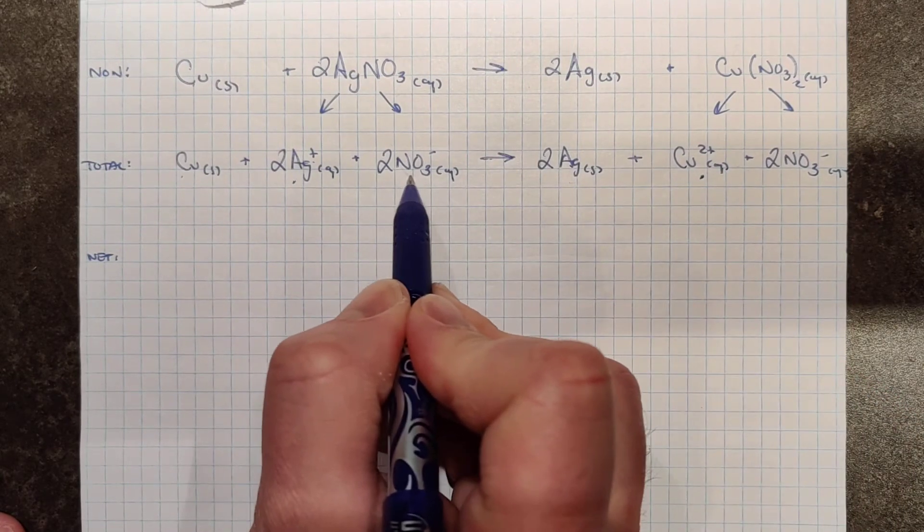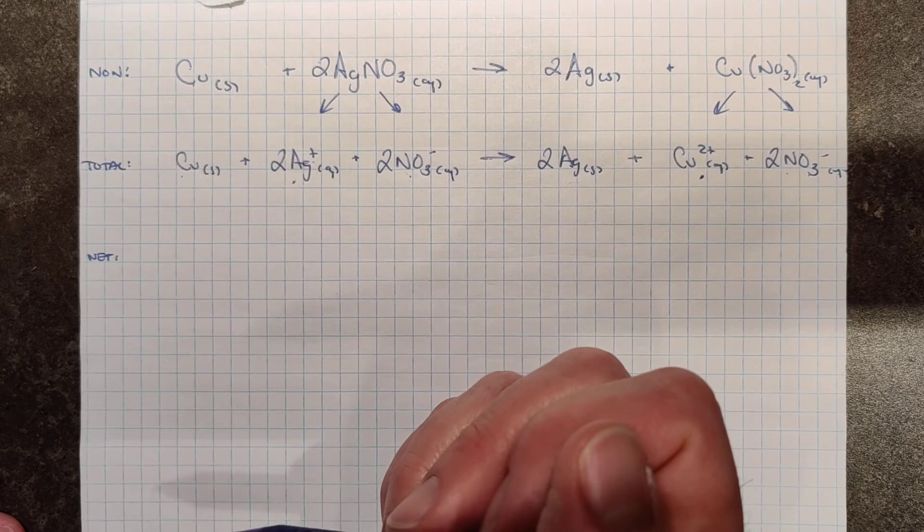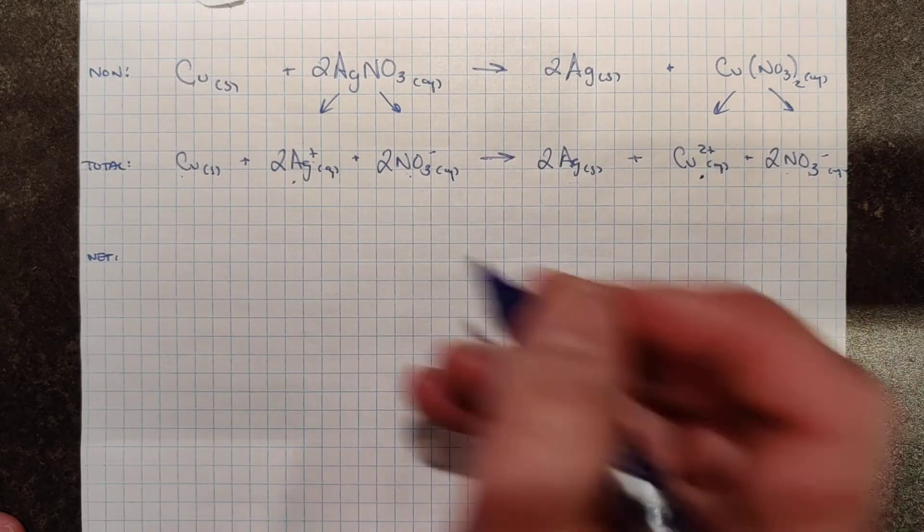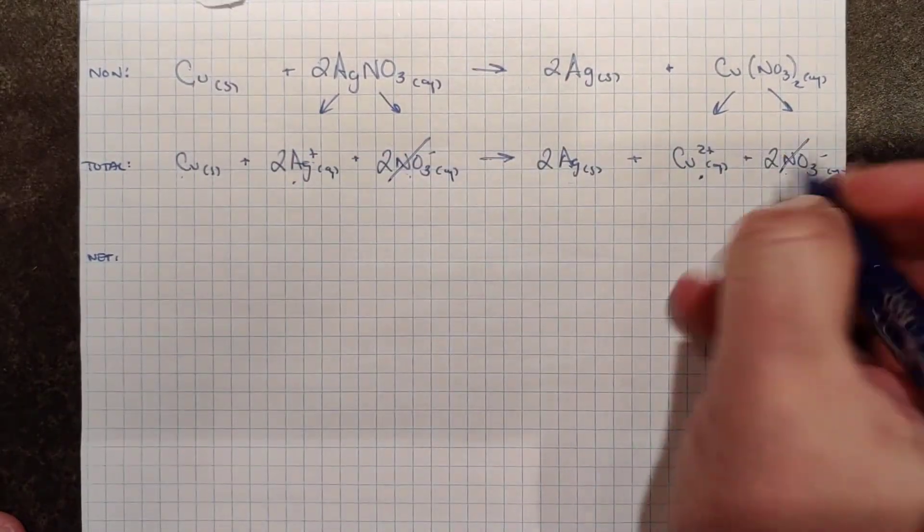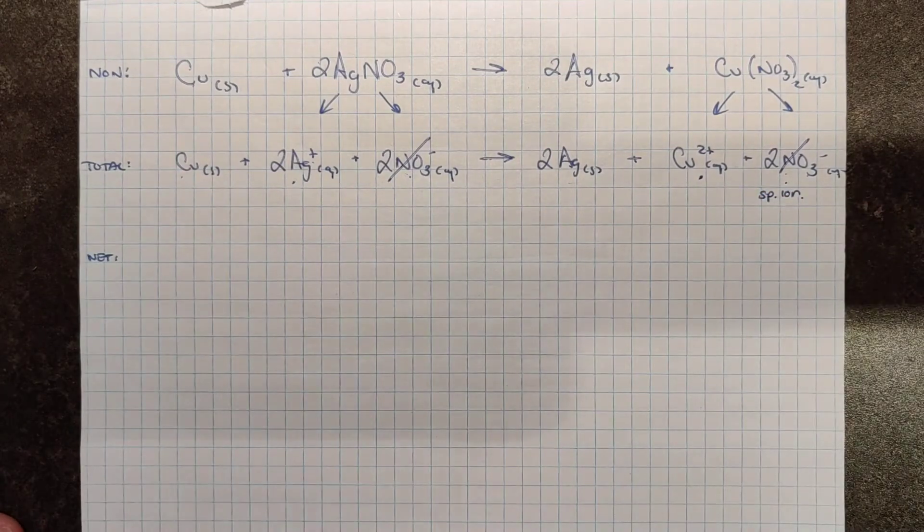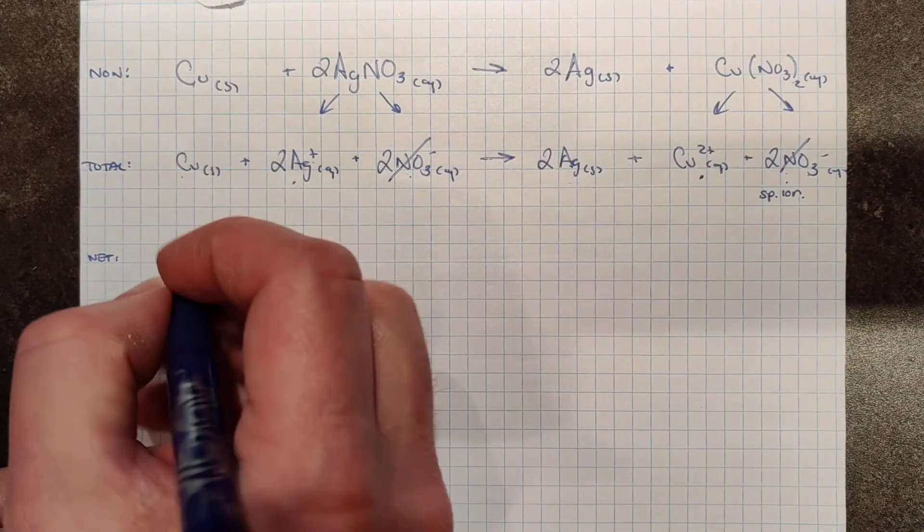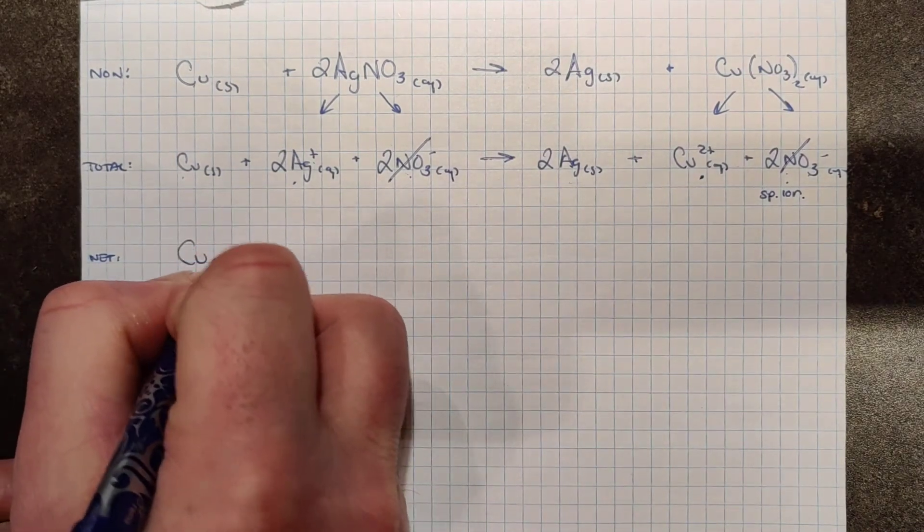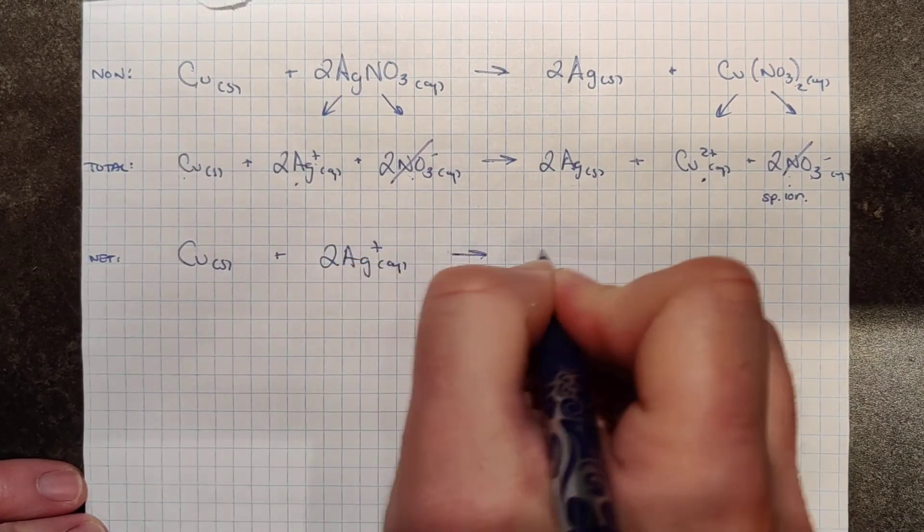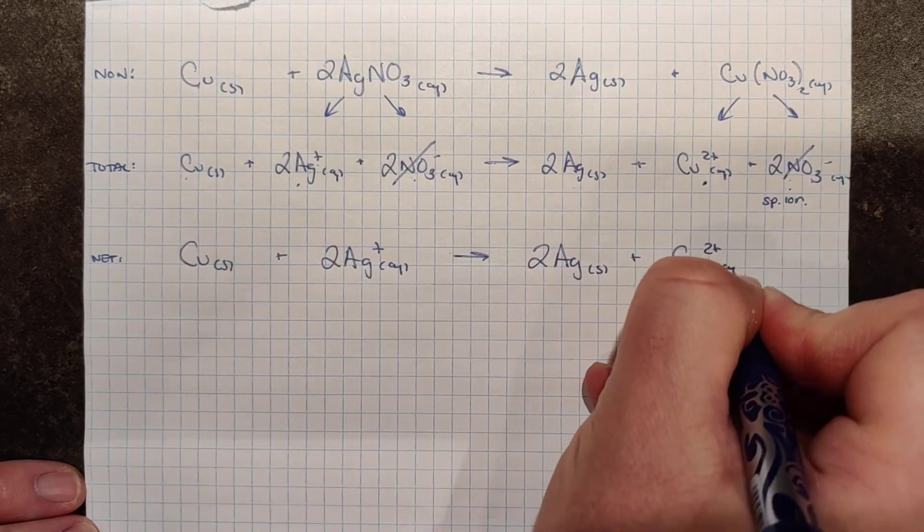But here I have two nitrate ions, and afterwards I have two nitrate ions, both of them hanging out in solution. In other words, nitrate, while available here, didn't actually participate in the reaction, but it went through no phase or sign change, and so it gets cancelled out as a spectator ion. And so it was really not participating in the overall reaction. And so if you take a look at the net reaction, I have solid copper reacting with two silver ions in solution to produce solid silver and a single copper ion in solution.